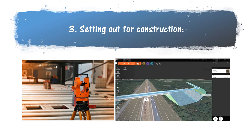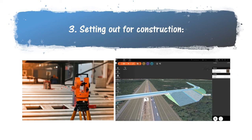Setting out of construction can be accomplished with surveying. As you can see on screen, a total station is being used, or we can use other surveying instruments. Once the survey is done we can import points into Civil 3D and design the road and embankment alignment. These are the techniques used to create the construction plans.